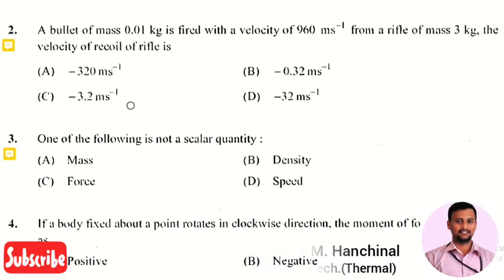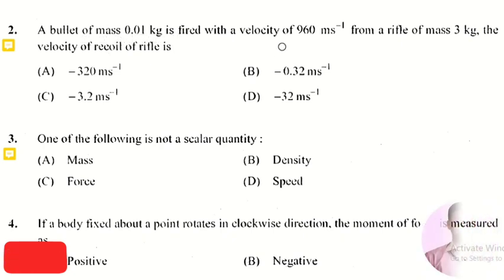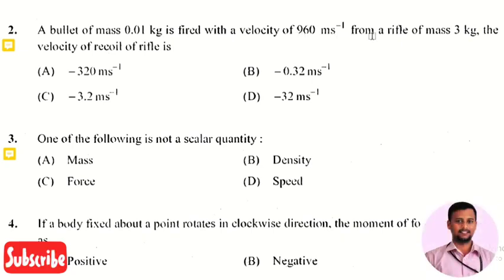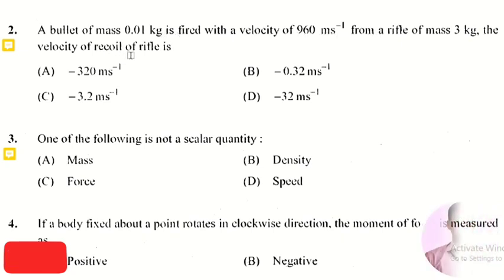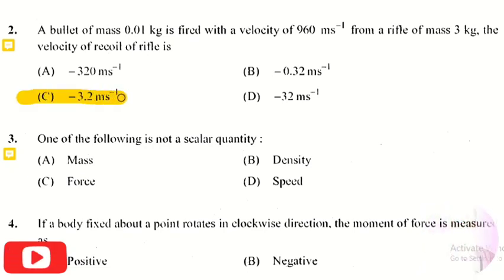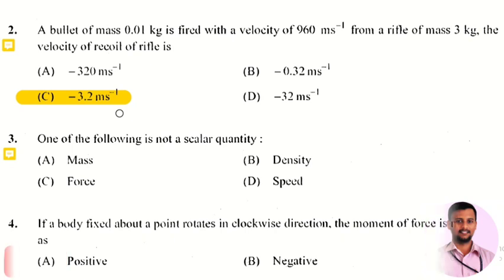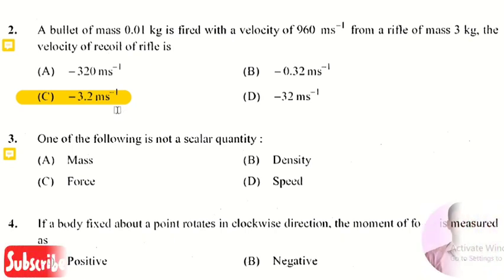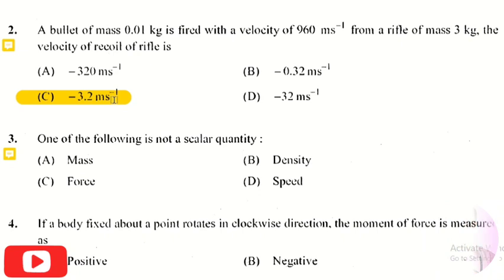The next question: a bullet of mass 0.01 kg is fired with a velocity of 960 m/s from a rifle of mass 3 kg. The velocity of recoil of the rifle is? The right answer is option 3, that is −3.2 m/s. In this question, we are asked at what velocity the rifle will rebound when it is fired.